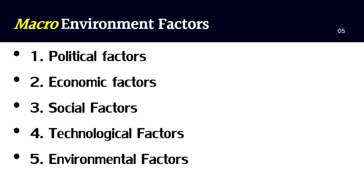Number five, environmental factors — these have become important due to the increasing scarcity of raw materials, pollution targets, and the push toward doing business in an ethical and sustainable way. Number six, legal factors — these include health and safety, equal opportunities, advertising standards, consumer rights and laws, product labeling, and product safety. It is clear that companies need to know what is and what is not legal in order to trade successfully.